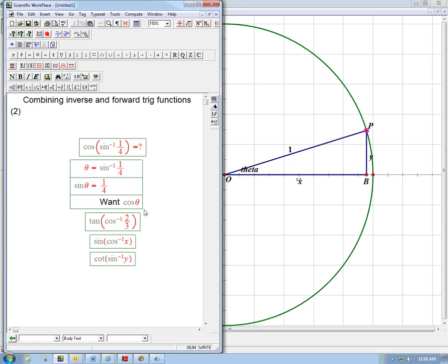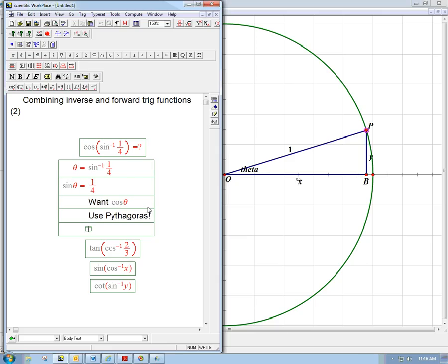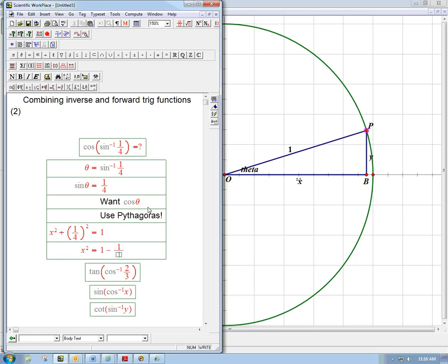So going back to the algebra, we just look at Pythagoras. We use Pythagoras. And we just know that x squared, that's the cosine, plus 1 fourth squared, let's put that in parentheses, is going to be 1.